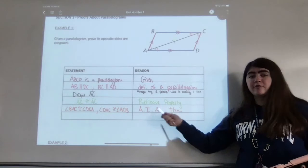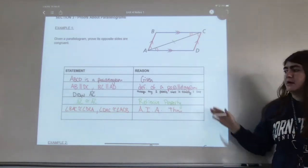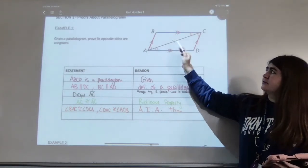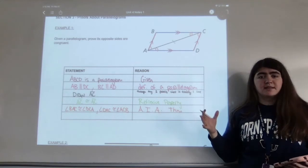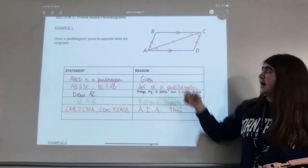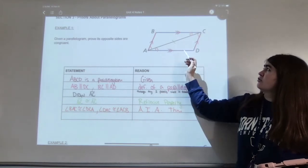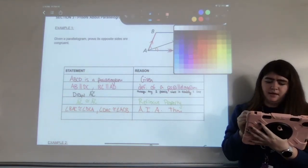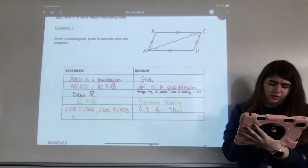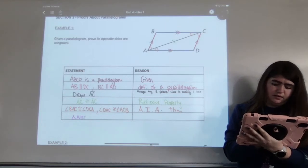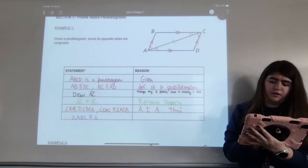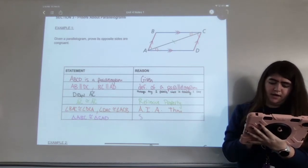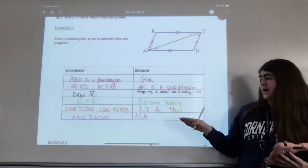So now I have angle, side, angle — which is one of our shortcuts. Because we have that shortcut, I can say that triangle ABC is congruent to triangle CAD by the angle-side-angle congruence postulate.